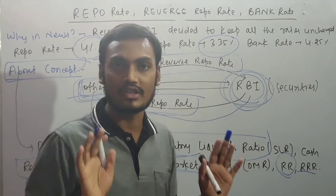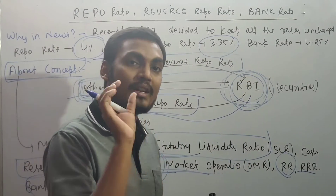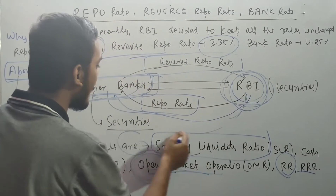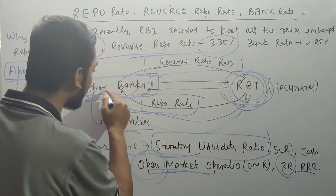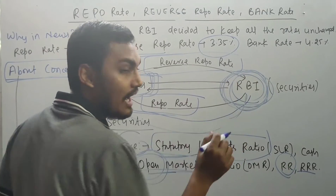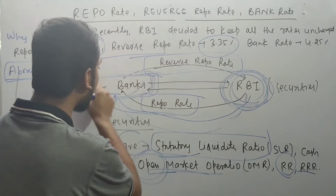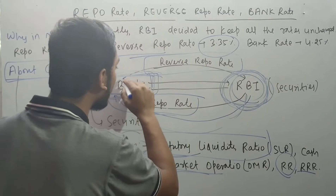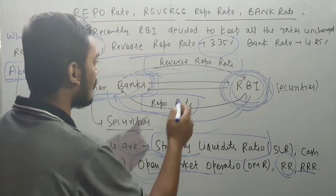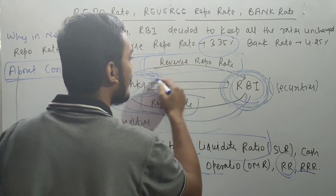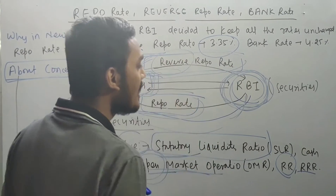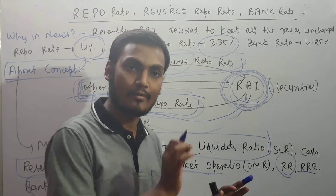The key concept to remember: if the RBI is lending money, the banks pay interest to RBI — that is the Repo Rate. If the RBI is issuing securities and banks are subscribing to them, then the RBI pays interest to those banks — that is the Reverse Repo Rate. The reverse relationship is why it is called the Reverse Repo Rate.